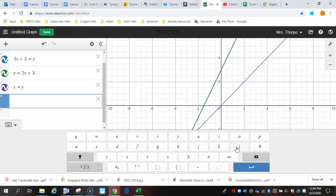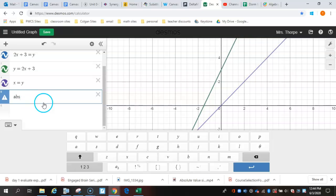like absolute value, square root, cube root. So if I type in a, b, s, it'll still change it to absolute value. Or if I change it to s, q, r, t, still the square root.